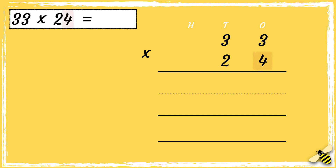First we multiply four by three — four times three is twelve. We can drop the one ten below in the tens column. Then we can multiply four by three tens — four times three is twelve, and then we need to add the extra one ten at the bottom, so it's thirteen.